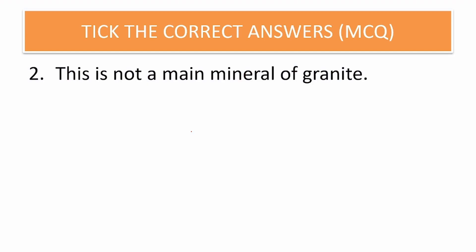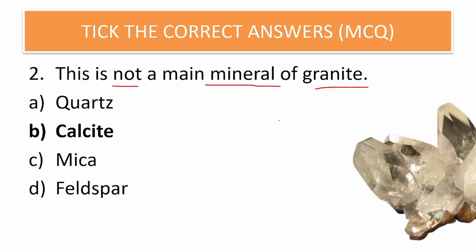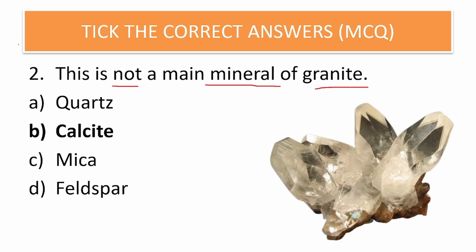The next question is: this is not a main mineral of granite. Options are quartz, calcite, mica, and feldspar. The correct answer to this question is calcite. Let us tick mark calcite.